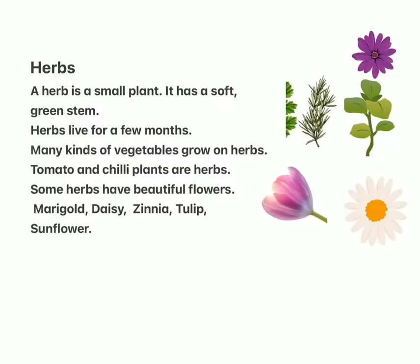A herb is a small plant. It has a soft green stem. Herbs live for a few months. Many kinds of vegetables grow on herbs. Tomato and chili plants are herbs. Some herbs have beautiful flowers — marigold, daisy, zinnia, tulip, and sunflower.